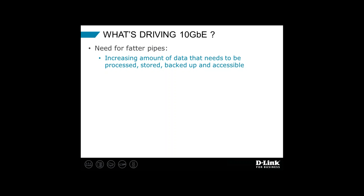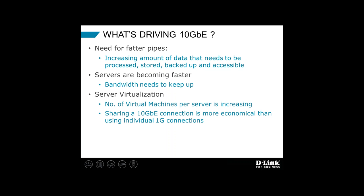Let's start by talking about what's really driving the need for 10 gigabit Ethernet. The answer is pretty clear — it's bandwidth. There's an increasing amount of data in business networks today that needs to be processed, stored, backed up, and accessible. Business networks need fatter pipes, they need more bandwidth. We've got servers becoming faster and faster, and the network infrastructure — the bandwidth — needs to keep up. In a lot of cases, gigabit used to be acceptable, used to be enough. Now it's not. Now we need 10 gig.